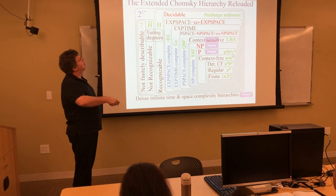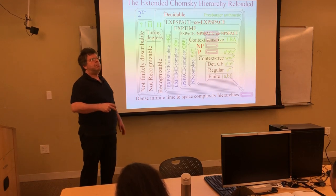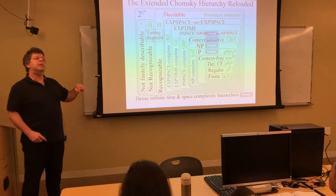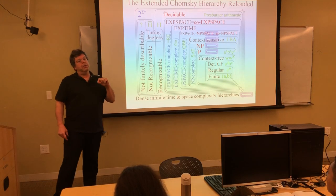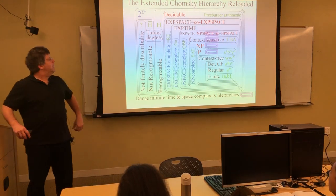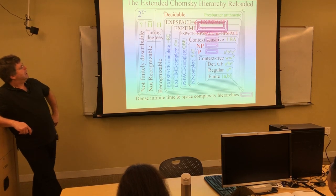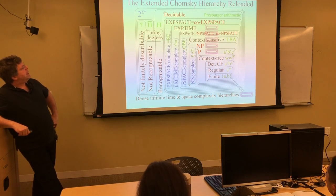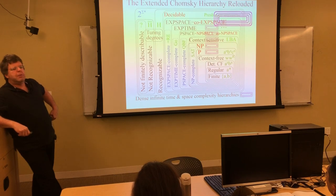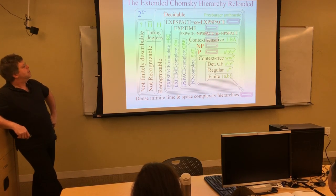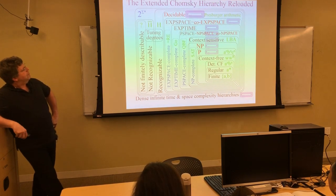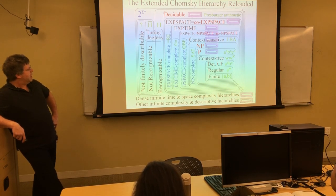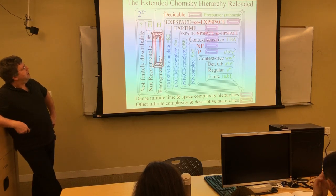There are plenty of other infinite hierarchies all over this Chomsky hierarchy. Within PSPACE you have all polynomial space classes: linear, quadratic, cubic, and everything in between — space n·log(n), space n·log²(n), n to the 1.5, n to the 1.999. Now we can adorn this extended Chomsky hierarchy with more and more space and time complexity classes, like a Christmas tree. There are also other complexity and descriptive hierarchies — star height for finite languages, Turing degrees — all of which are infinite.